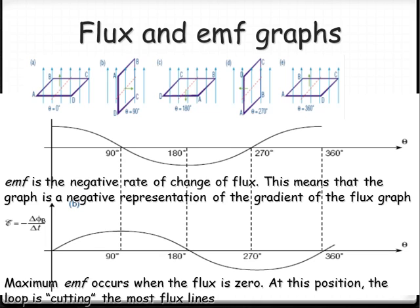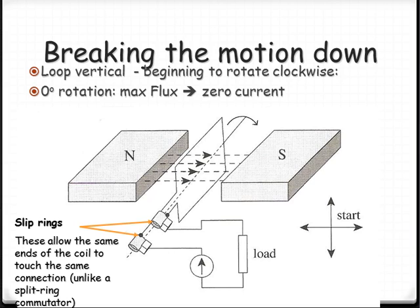Let's break this motion down into a quarter of a rotation at a time and look at the current induced throughout the rotation. We'll be using the right-hand slap rule and Lenz's Law to determine the direction of the current at any given point. Starting with the loop being vertical — maximum flux — we have zero current because it's not cutting any field lines at this point. These components used for AC motors and AC generators are called slip rings.